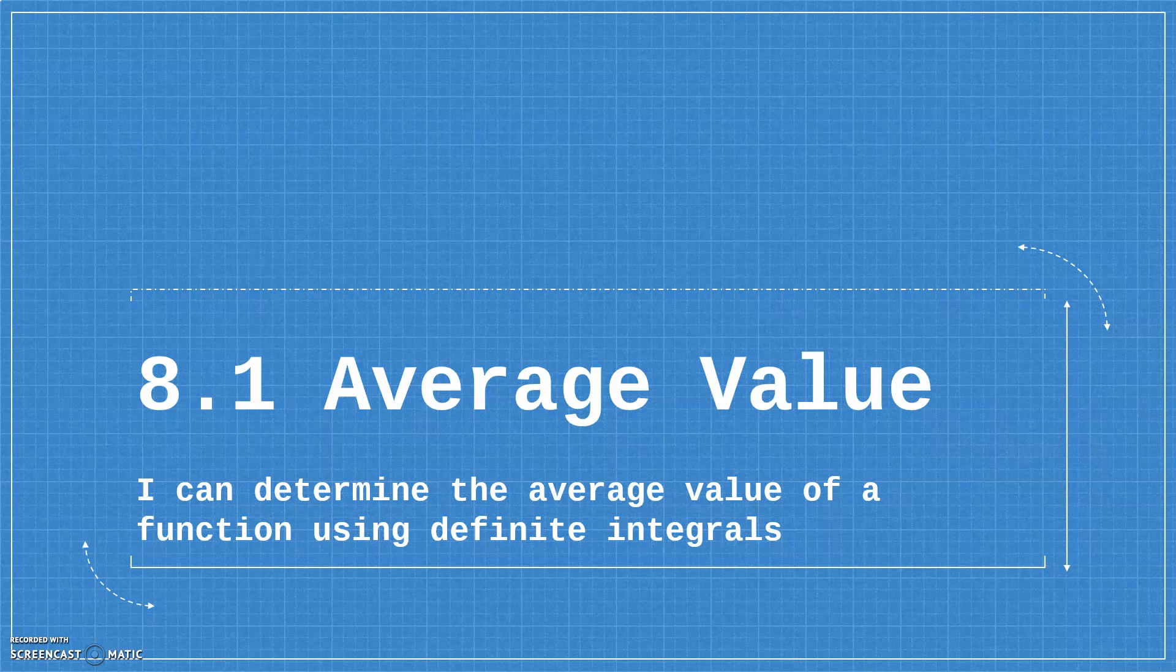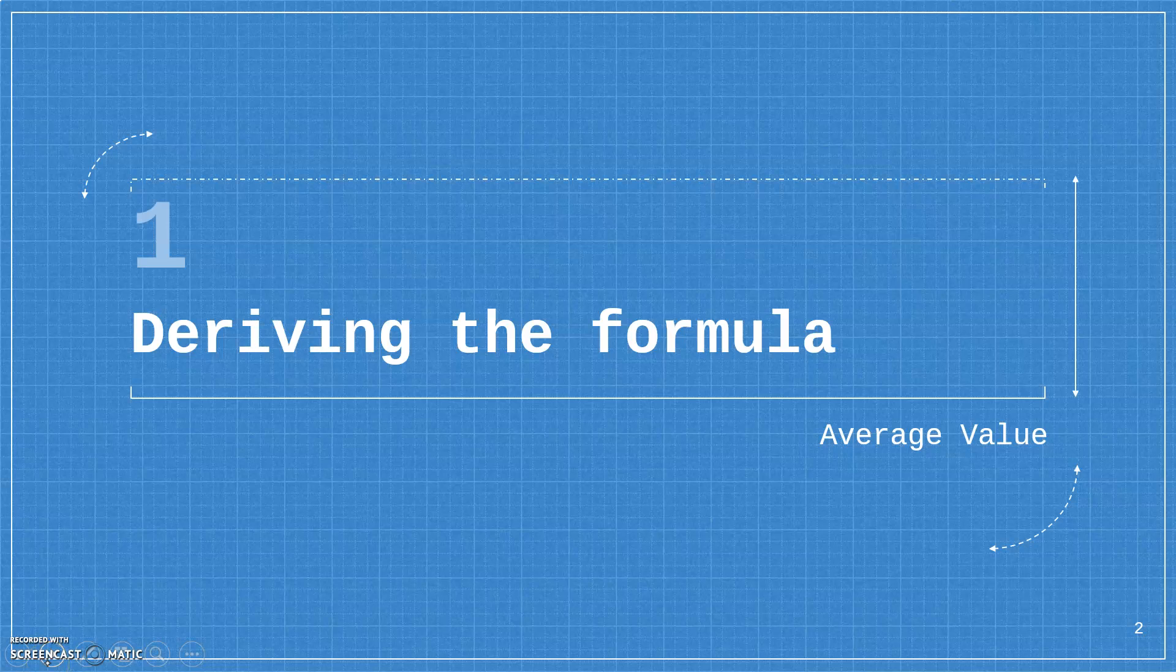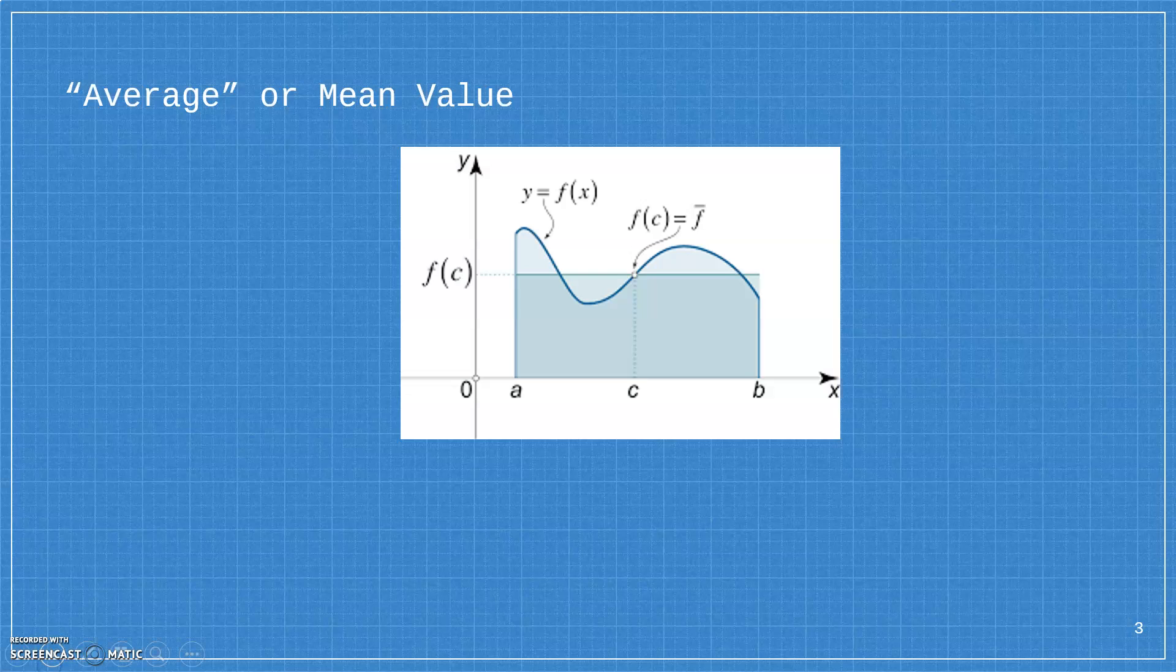So what that means is the y-coordinate could be going up and down, but what is the average y-coordinate for a function? When we think of average, we think we're going to add up a whole bunch of things and divide by how many there are. But when we're talking about a continuous function, there are infinitely many y-coordinates along that interval from a to b. So we can't really add up all of the y-coordinates and divide by how many there are.